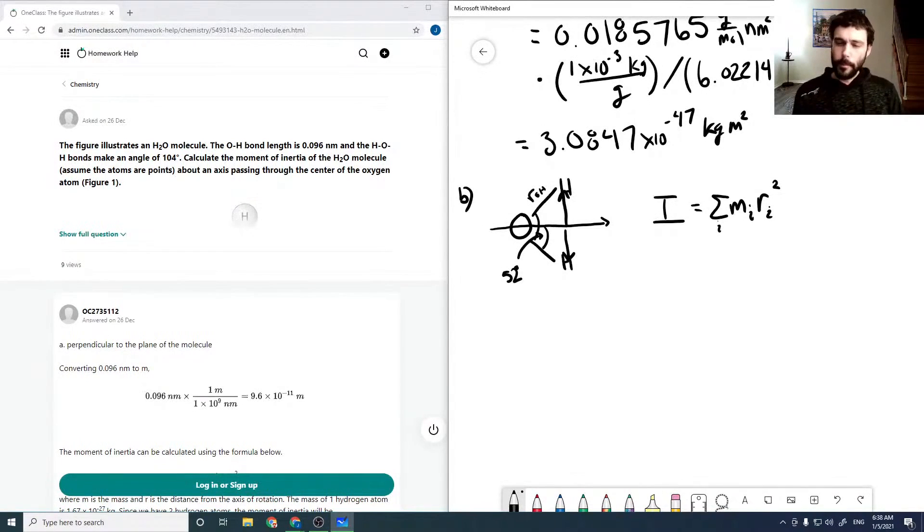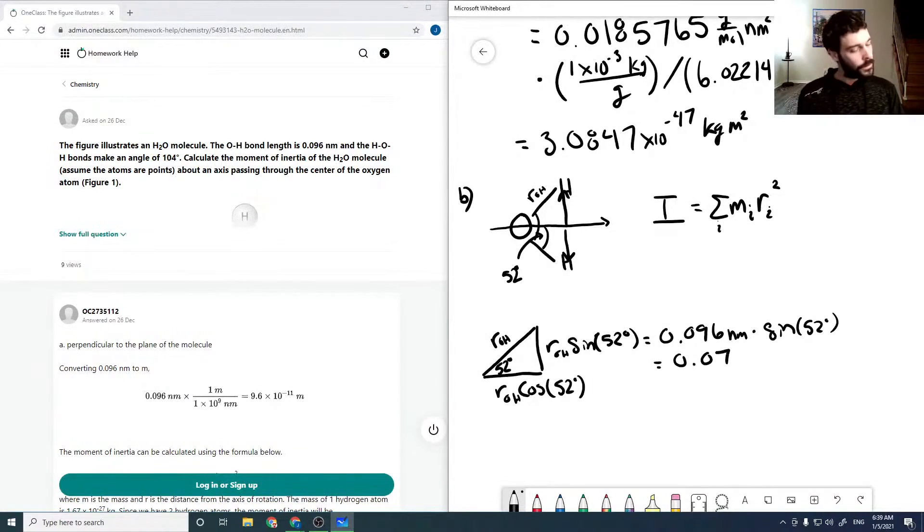Which makes this side over here, this would be sine, right? So I'm just going to redraw the triangle that I've got here. So this would be ROH. This would be 52 degrees. And so this would be ROH cosine of 52 degrees. And this would be ROH sine of 52 degrees. Which is equal to 0.096 nanometers times the sine of 52, which comes out to be 0.0756 nanometers.